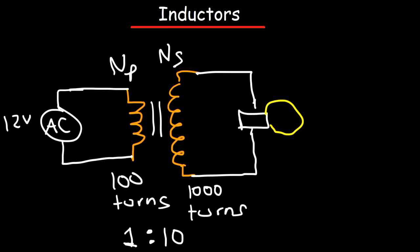The voltage is going to be higher in the circuit that has more turns. Because the right side has 10 times more turns, the voltage on the right side will be 10 times greater. Now let's say the current on the left is 10 amps — the current on the right side is going to be 10 times less. There's a trade-off.